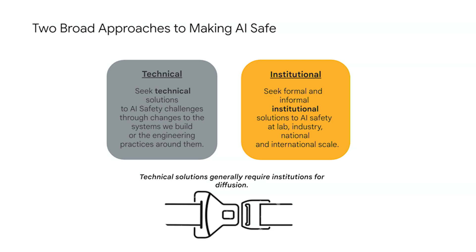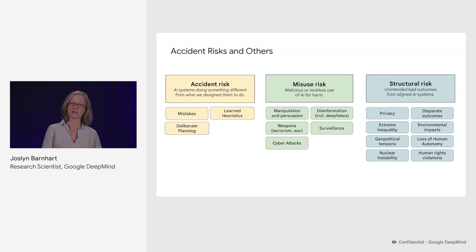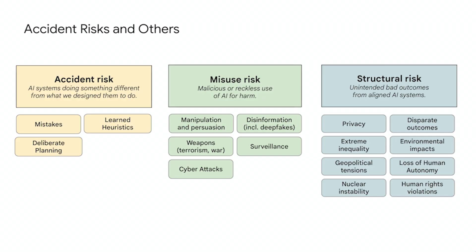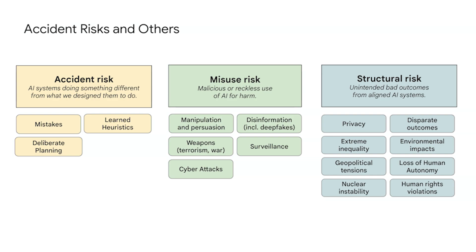So far in this course, we've thought a lot about one particular broad type of risk: accident risk, which is when AI systems are doing something different from what we designed them to do. But this is not the only potential form of risk from advanced AI models. We can also think about misuse risk — the malicious or reckless use of AI for harm — and also structural risk, which are unintended bad outcomes that emerge from AI systems behaving exactly as we intended, such as geopolitical tensions, human rights violations, and environmental impacts. When we think about institutional safety, we're thinking about approaches to mitigate across all forms of risk.